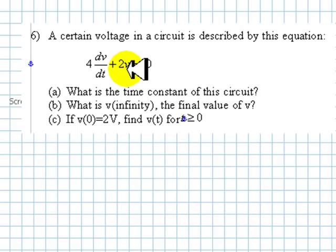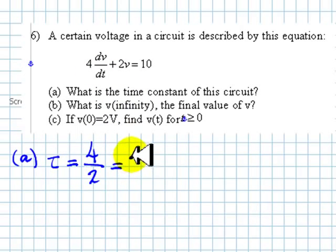And the time constant of decay or increase of voltage is going to be given by this coefficient divided by this one. The time constant is 4 divided by 2, and that is going to be 2 seconds. The answer to question A: tau is coefficient 4 divided by coefficient 2, 2 seconds.